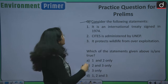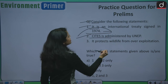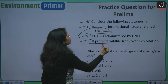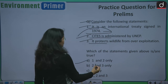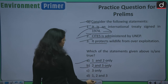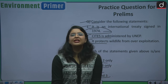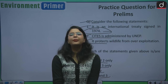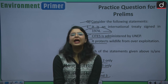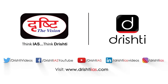Despite these challenges, CITES is a very important convention for preserving threatened wildlife species and is important from an examination point of view. Now for a practice question: Consider the following statements — Statement 1: CITES is an international treaty signed in 1974. Statement 2: CITES is administered by UNEP. Statement 3: It protects wildlife from over-exploitation. Which of the following statements are correct? Option A: 1 and 2 only; Option B: 2 and 3 only; Option C: 3 only; Option D: 1, 2, and 3. Kindly drop your answers in the comment box below.